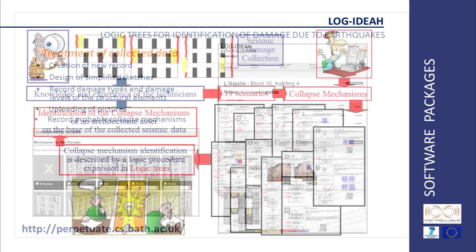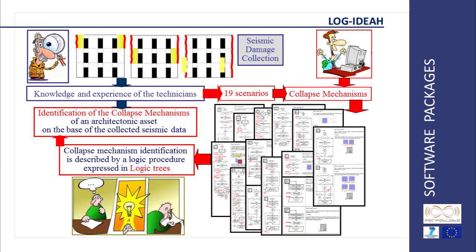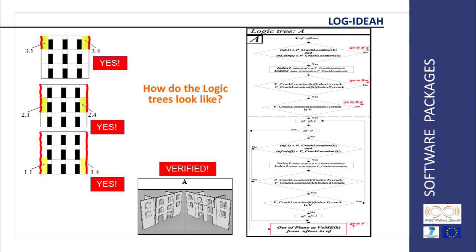Log Idea is not only a tool for data collection — it is not just a database — but also interprets the data collected on site or by pictures using logic trees. Different logic procedures for different types of collapse mechanisms have been identified. According to the type of damage collected by the surveyor in the platform, Log Idea will provide the type of collapse mechanism that is probably occurring on the architectonic asset under consideration.